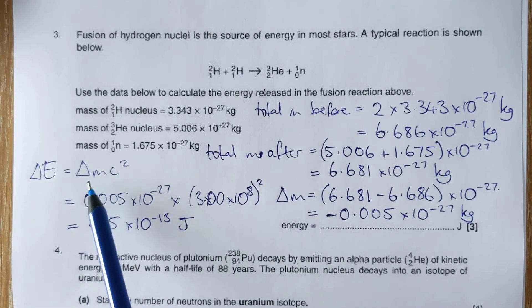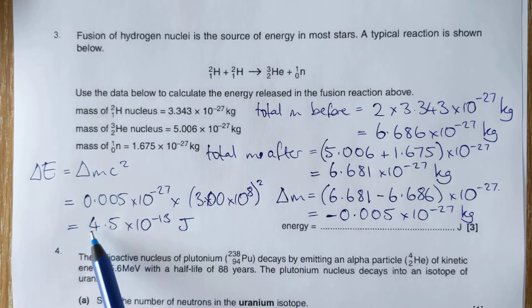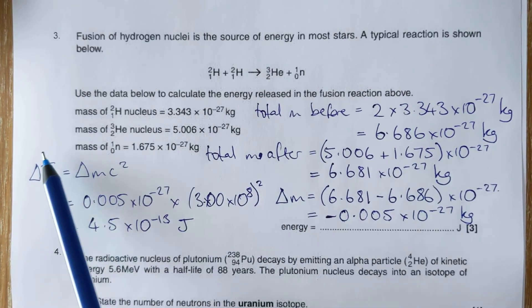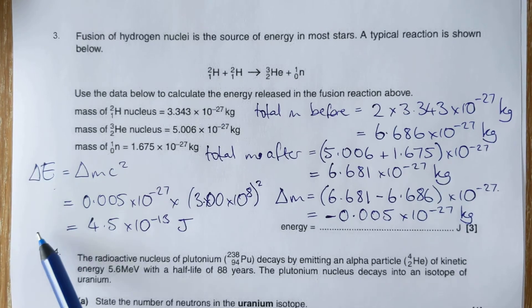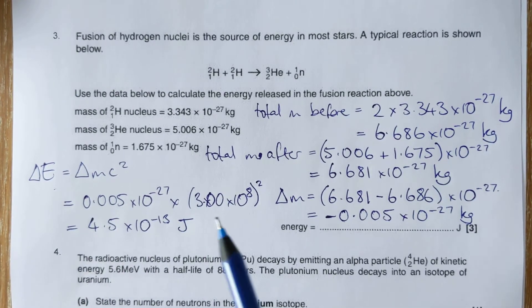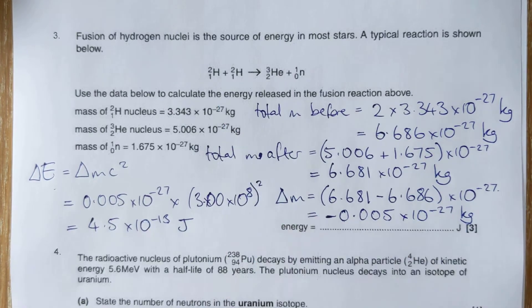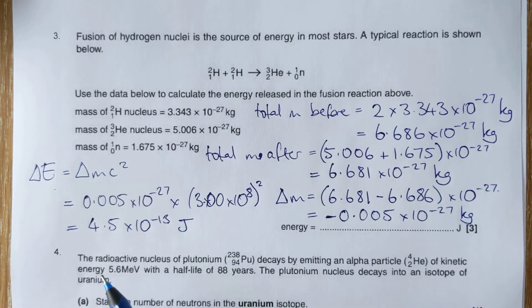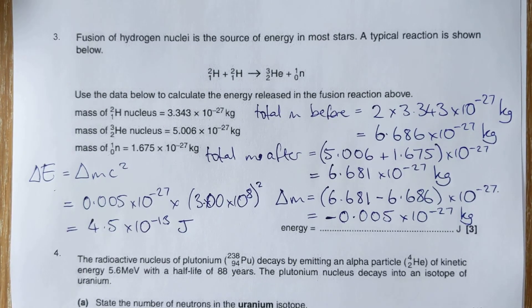Now, I've ditched the minus sign here. If you want to put it in, by all means, because really that's you being completely correct. The change in energy is also negative because it is losing energy. Energy is coming out of the reaction. However, I've ditched it, and that's the answer: 4.5 times 10 to the minus 13 joules.